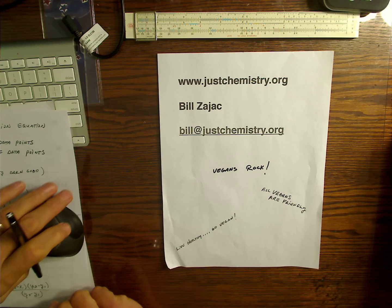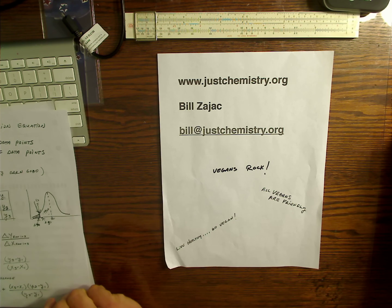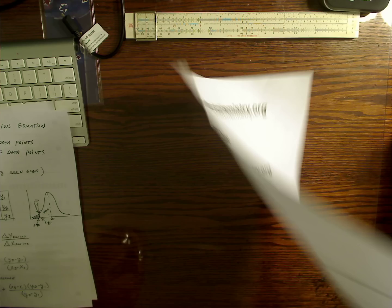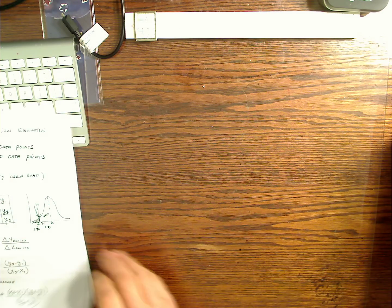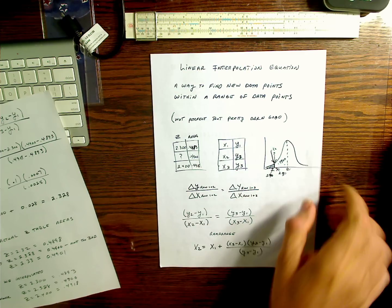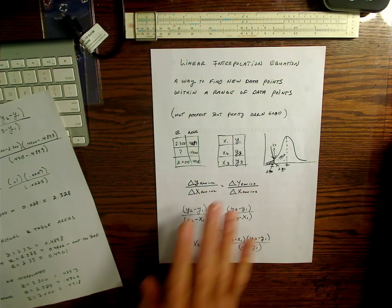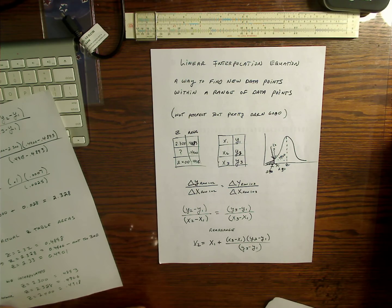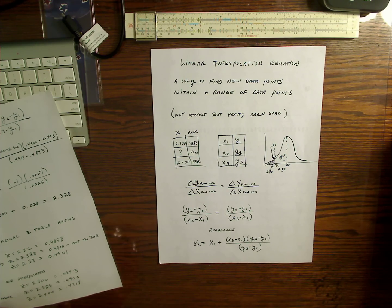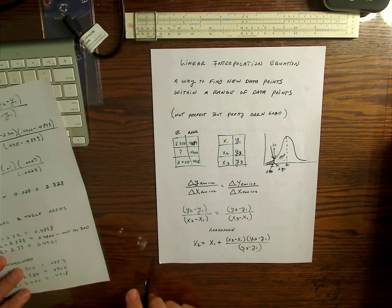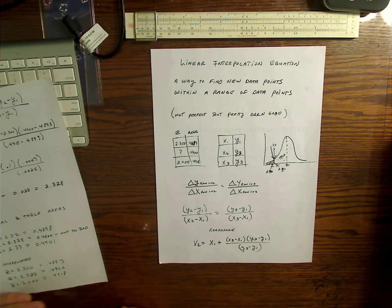Hi, this is Bill Zajac from JustChemistry.org. In this video we're going to talk about linear interpolation — what is interpolation? It's a way to find new data points within a range of data points. We see it all the time when we're doing experiments, when we're looking up data. It's not perfect but it's pretty darn good and it'll help you become more accurate.